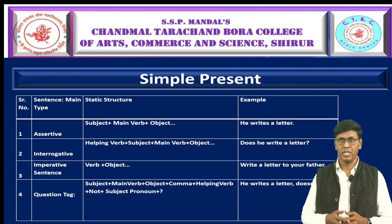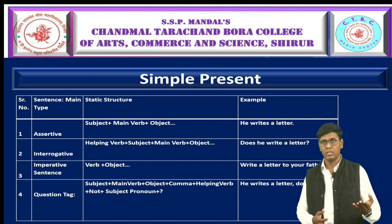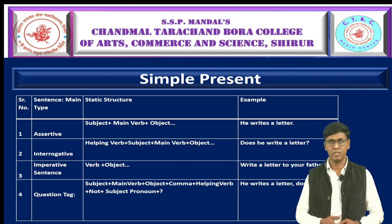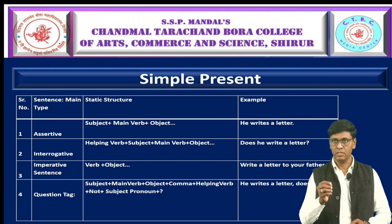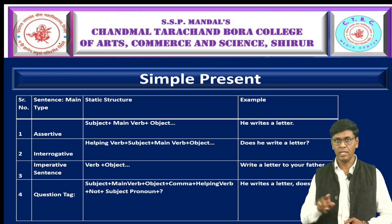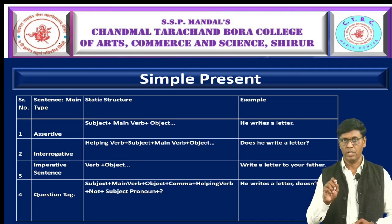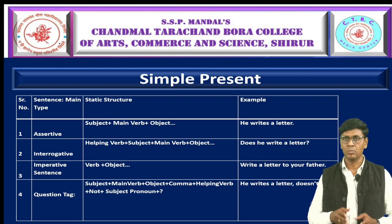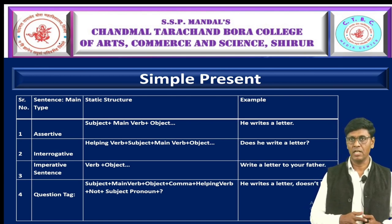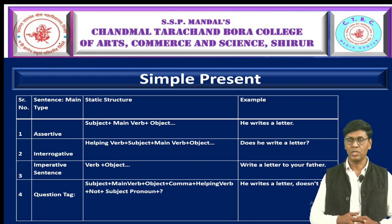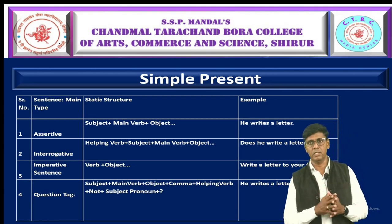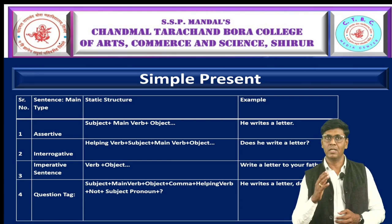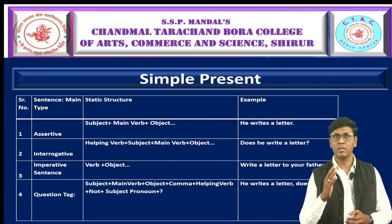If you want to make your conversation dramatic, then you can use question tag sentences. For question tag, the basic pattern given in the table is: subject, verb, object — then a comma because it is the end of the regular sentence — and then the question tag. The question tag begins with a helping verb. If the sentence is positive, then in the question tag negation is given — 'not' — and the last element is a pronoun. Just like: he writes a letter, doesn't he? In this way, with the help of the basic pattern, we can make a lot of sentences by learning simple present tense.